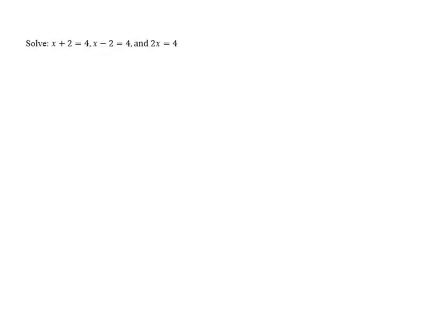Solve x plus 2 equals 4, x minus 2 equals 4, and 2x equals 4. We're going to look at each of these equations one at a time, starting with x plus 2 equals 4. Whenever we're trying to solve an equation, our goal is to get the variable alone, isolated on one side of the equation.